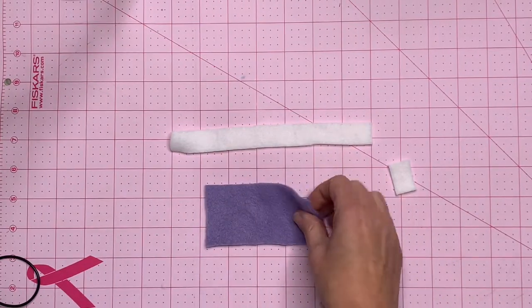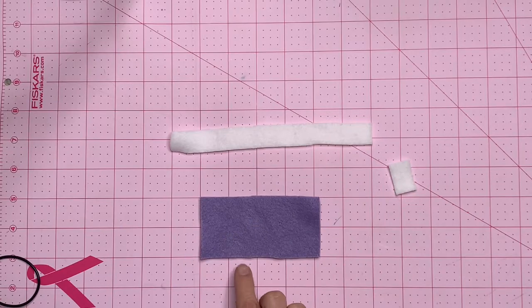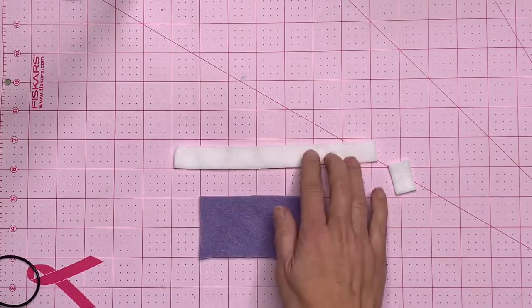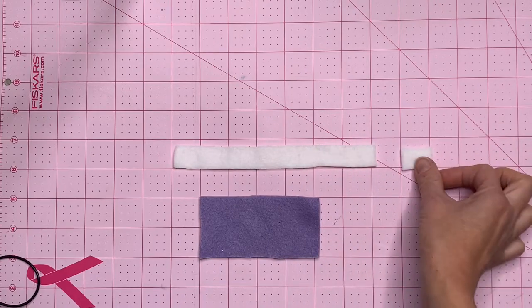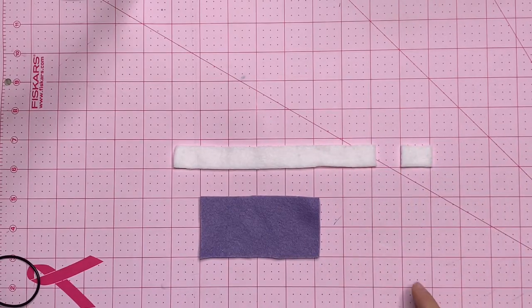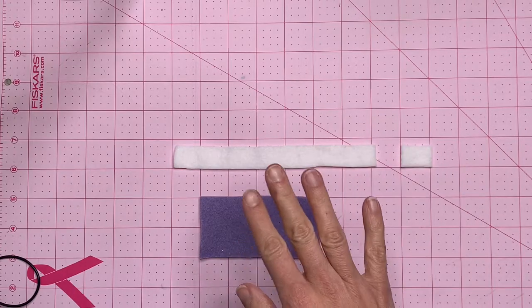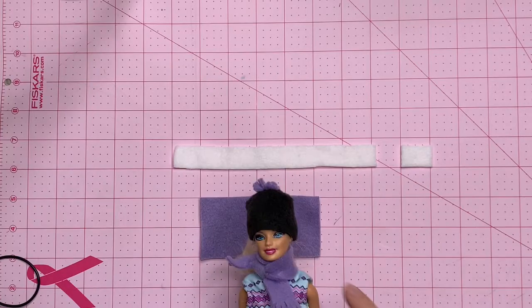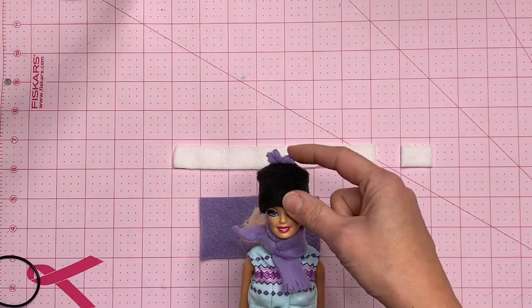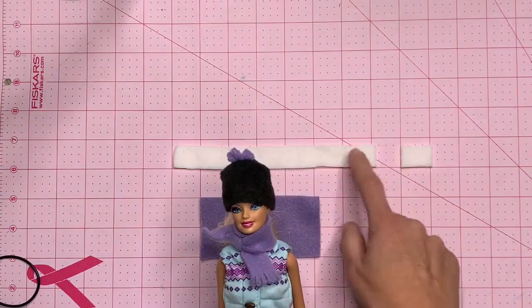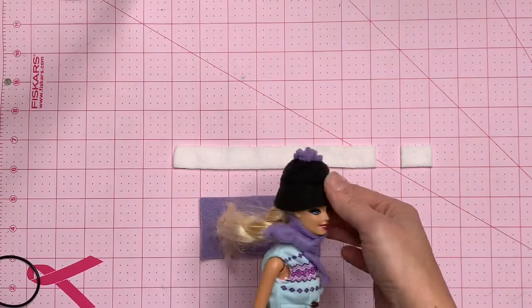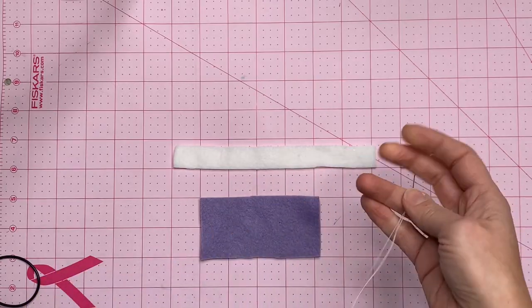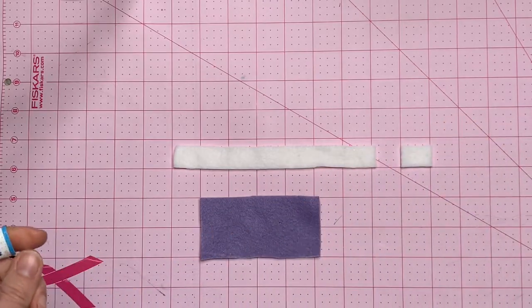You're going to need a piece that is 2 by 4 inches and another piece that is 7 by 3 quarter inches and a little piece that is an inch by 3 quarter inches. You can make it all the same color or three different colors. I'm doing the same color for the scarf and the pom-pom, which is white, and another color for the hat.